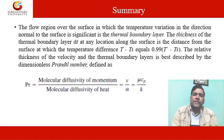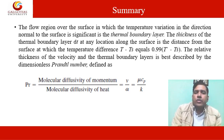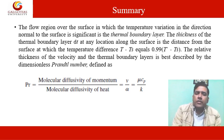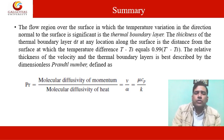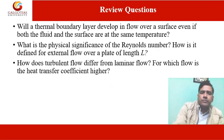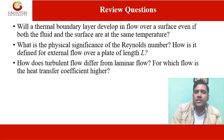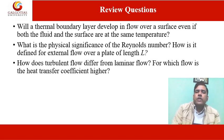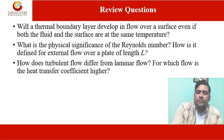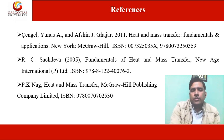Today we learned about the thermal boundary layer, how to calculate its thickness, and what the Prandtl number means — defined as the ratio of molecular diffusivity of momentum to molecular diffusivity of heat, that is nu upon alpha, equal to mu Cp upon K. Review questions include: How does a thermal boundary layer develop even if fluid and surface are at the same temperature? What is the physical significance of the Reynolds number? How does turbulent flow differ from laminar flow, and for which is the heat transfer coefficient higher? These are the references from which the presentation was prepared. Thank you.